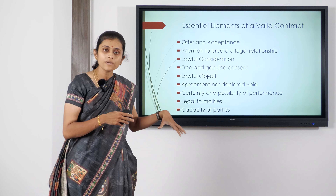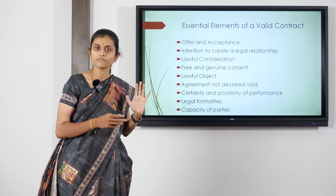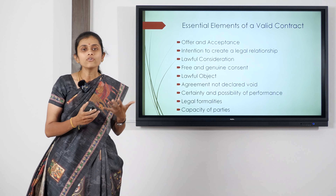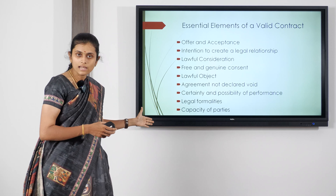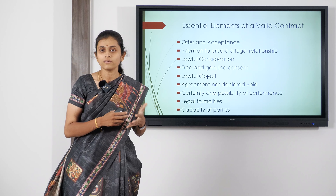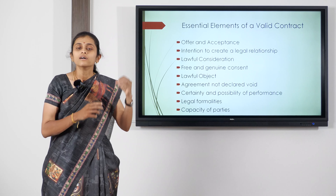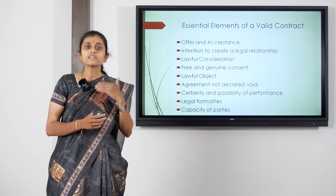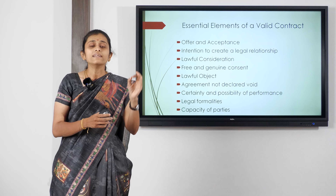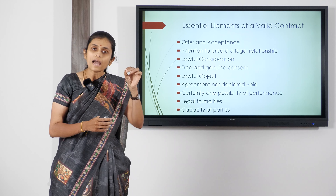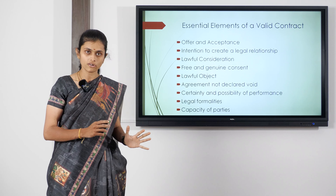Before moving on to the topic, I'll give a brief introduction about the essential elements of a contract. In order for a contract to be valid and legally enforceable, these essential elements are mandatory. The first one is offer and acceptance: a person makes an offer to a person or the public at large, and when the intended person accepts it, it becomes an agreement, and when it becomes legally enforceable, it becomes a contract.